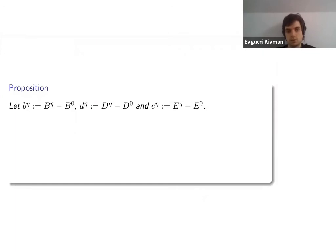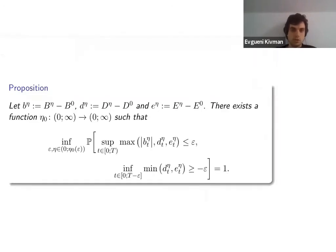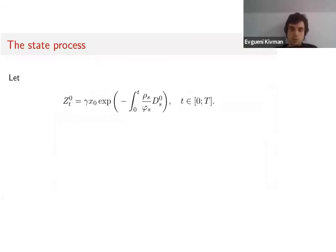If we define small b^η, d^η, e^η as the deviations of these processes, we can prove that there exists such a function ε(η) going to zero such that maximums of the deviations are small up to capital T. But we have to pay attention on the one side of the time axis because we have the singularity condition that A goes to infinity if t goes to capital T. This is why we don't have this second inequality until T, but only until T minus ε.